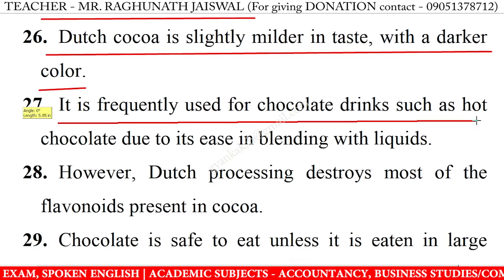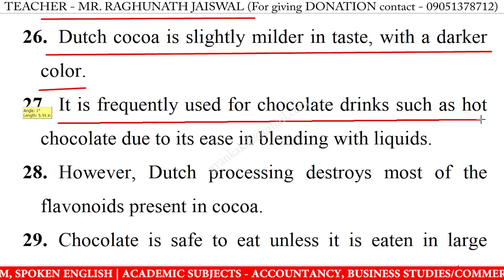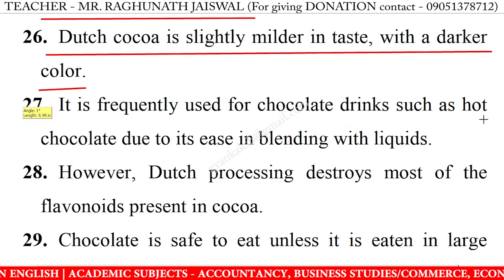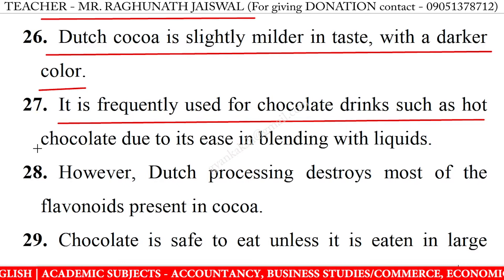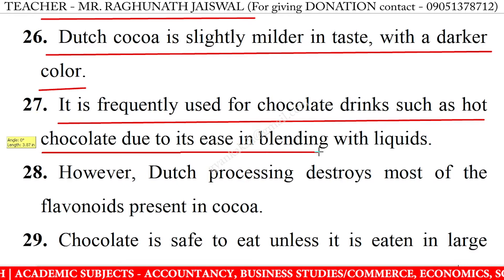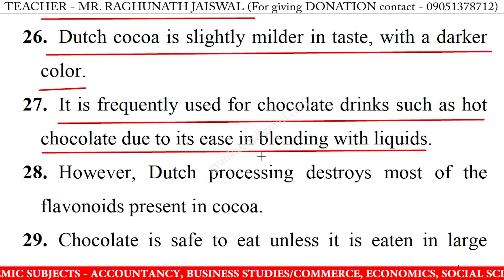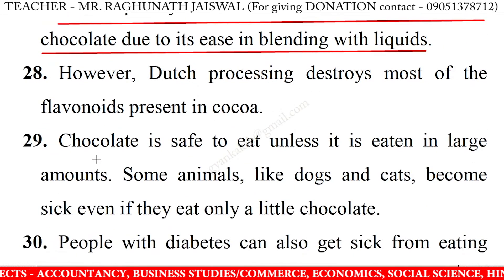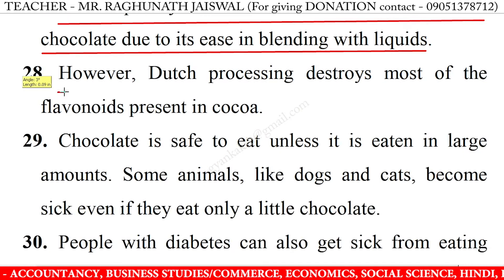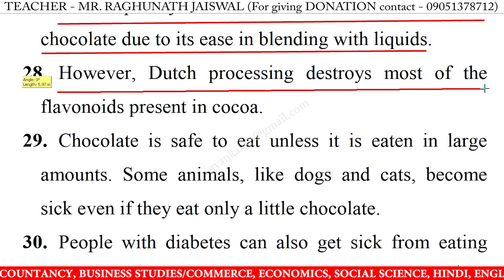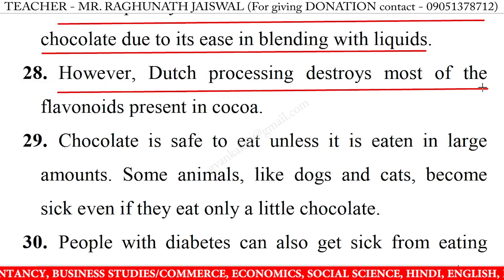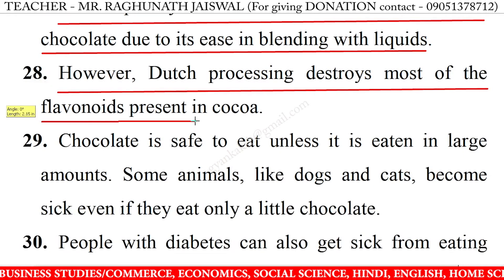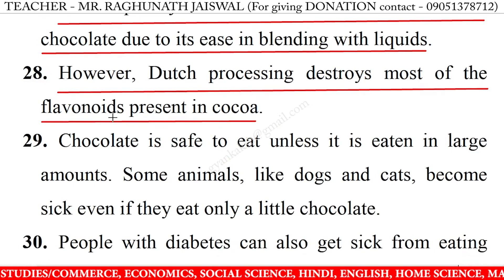Dutch cocoa is frequently used for chocolate drinks such as hot chocolate due to its ease in blending with liquids. However, Dutch processing destroys most of the flavonoids present in cocoa.